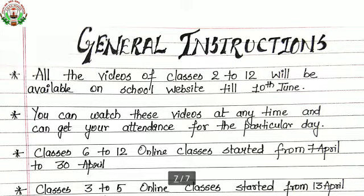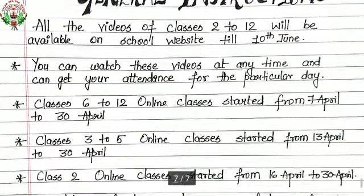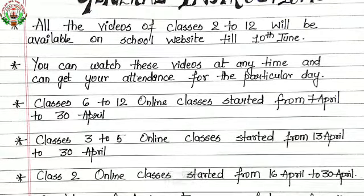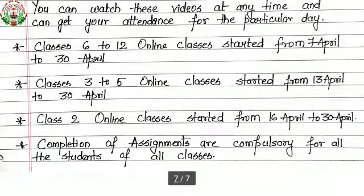Some instructions: all the videos of classes 2 to 12 will be available on the school website till 10th June. You can watch these videos at any time and get your attendance for the particular day. Classes 6 to 12 started from 7 April to 30 April; classes 3 to 5 from 13 April to 30 April; class 2 from 16 April to 30 April. Completion of assignments is compulsory for all students of all classes. Thank you.